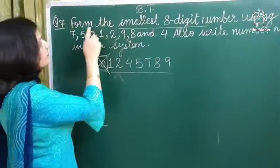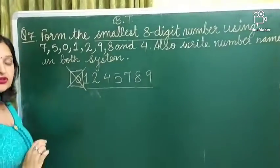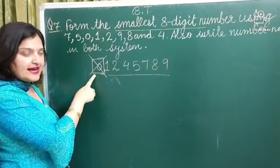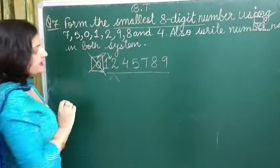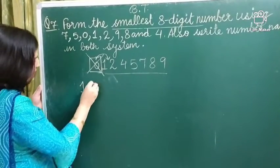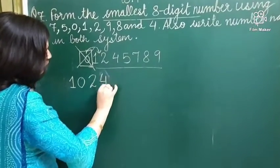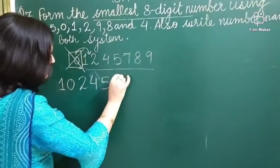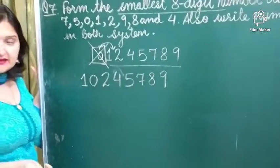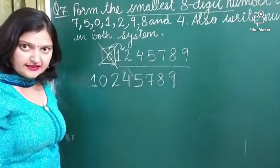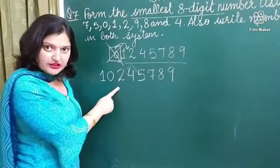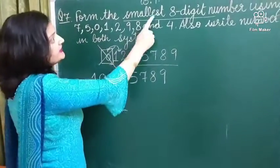Lekin hum mein kya kaha hai? We have to form the smallest 8 digit number. So hum kya karenge? Hum 1, 0 ko extremely left side na rakh kar, hum usko next place pe rakhir. After 1 we have to write 0. So humara number kya banega? 1, 0, 2, 4, 5, 7, 8, 9. Iske alawa, aapko joh bhi possibility lagti hai number bantane ki, aap bana kar dekhiye. Lekin woh sabhi number joh hai, is number se bade hoong ghe. So this number will be the smallest 8 digit number.